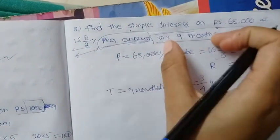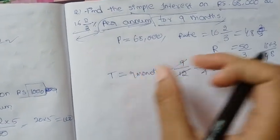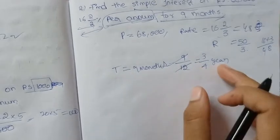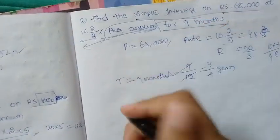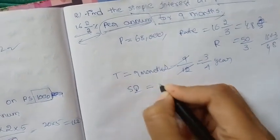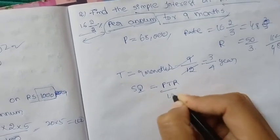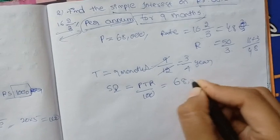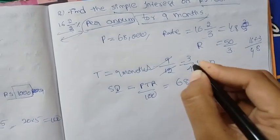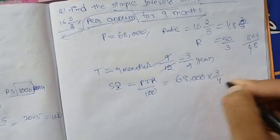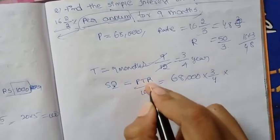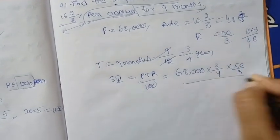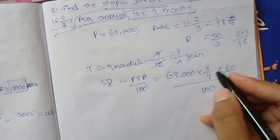If we have months, we will convert to years — months will be divided by 12. Now we have simple interest: PTR divided by 100. The principal amount is 68,000. Time is 3 by 4 years, and R for rate of interest is 50 divided by 3, whole divided by 100.